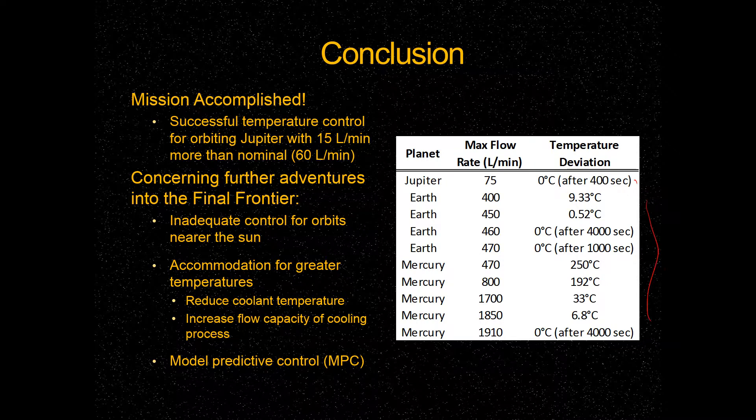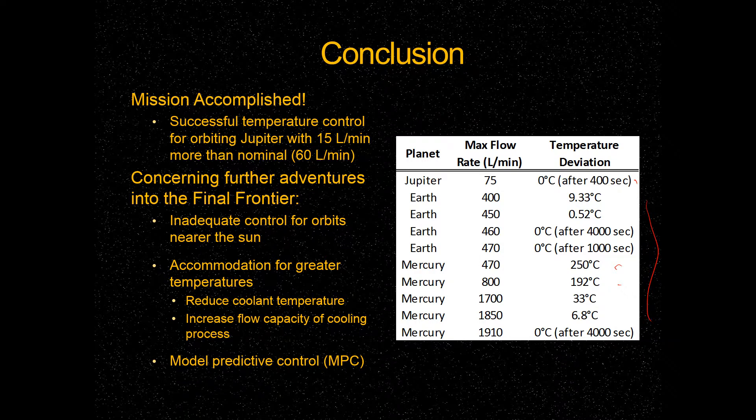We ran our system for orbiting Earth and Mercury or anywhere closer near to the sun, we noticed here that our temperature deviations at the current flow rates would be far greater and too large to sustain life on this spaceship. So in order to accommodate that, we would have to dramatically increase the flow rate of our coolant or somehow reduce the current coolant temperature. And that would enable us to orbit planets near the sun.